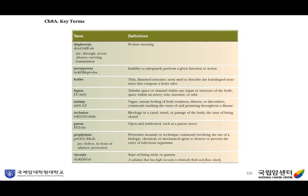First, key terms. Diaphoresis means profuse sweating. Incompetent means inability to adequately perform a given function or action. Leaflet is a thin flattened structure — the term used to describe the leaf-shaped structures that compose a heart valve. The lumen is a tubular space or channel within any organ or structure of the body, usually the space within an artery, vein, intestine, or tube. Malaise is a symptom of vague, uneasy feeling of body weakness, distress, or discomfort, commonly making the patient unsettled and persisting throughout a disease.